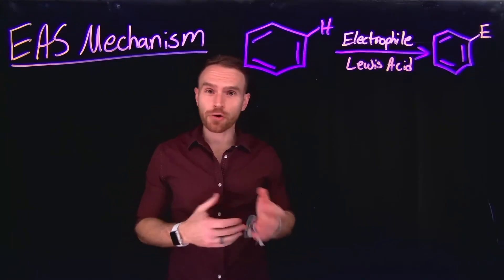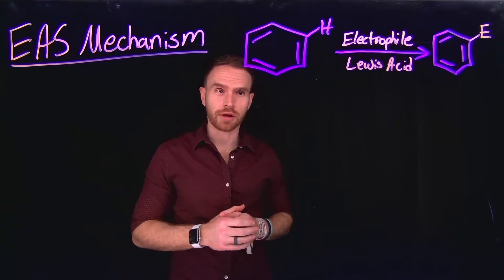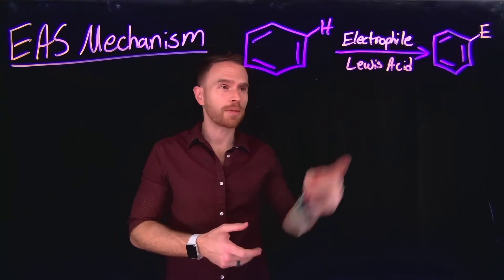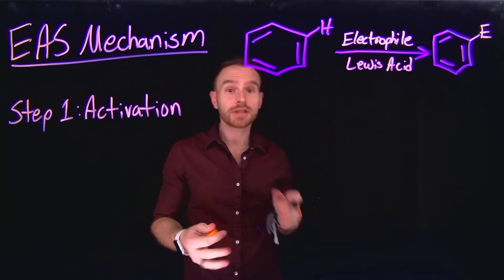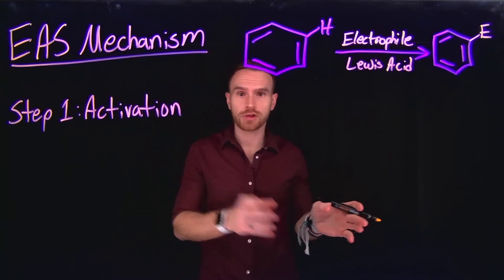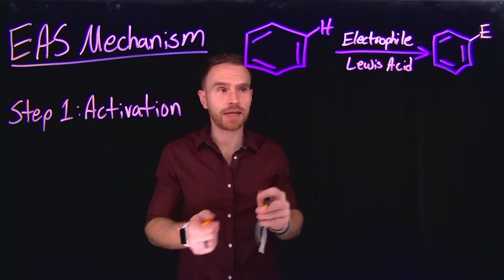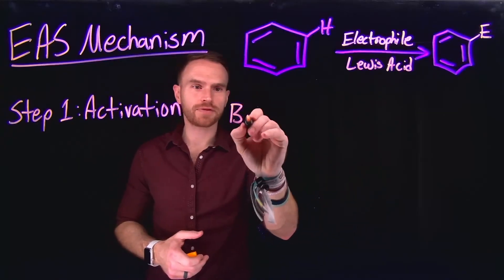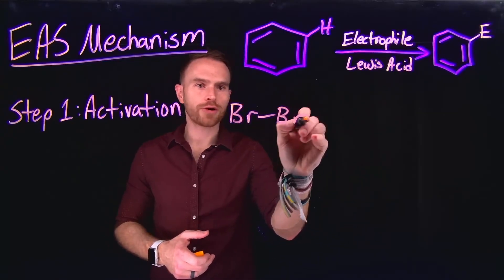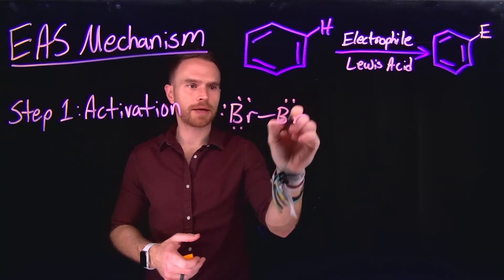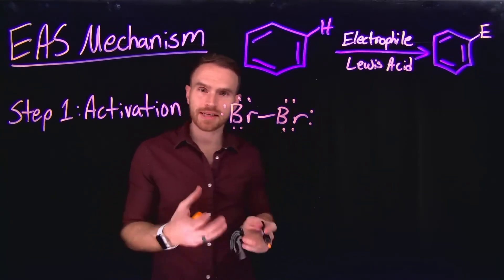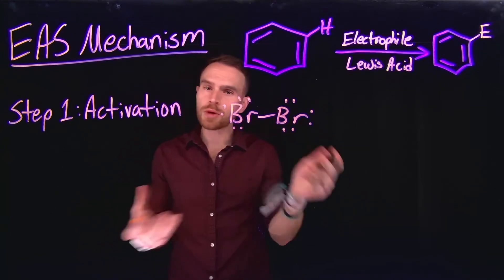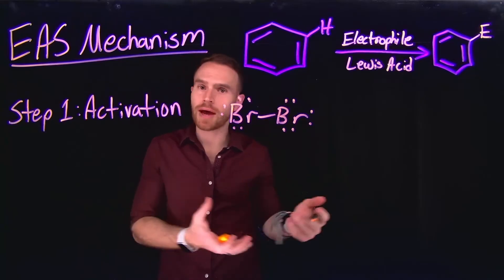Let's delve into the general mechanism of electrophilic aromatic substitution, where a carbon-hydrogen bond is replaced by an electrophile, often aided with the presence of a Lewis acid. For many of these reactions, the first step is activation of the electrophile using a Lewis acid. Consider the case of bromination, where you're using a bromine diatomic molecule — the electronegativity difference between the two atoms is zero since they are the same atom. Therefore, we would not expect this molecule to act as an electrophile.